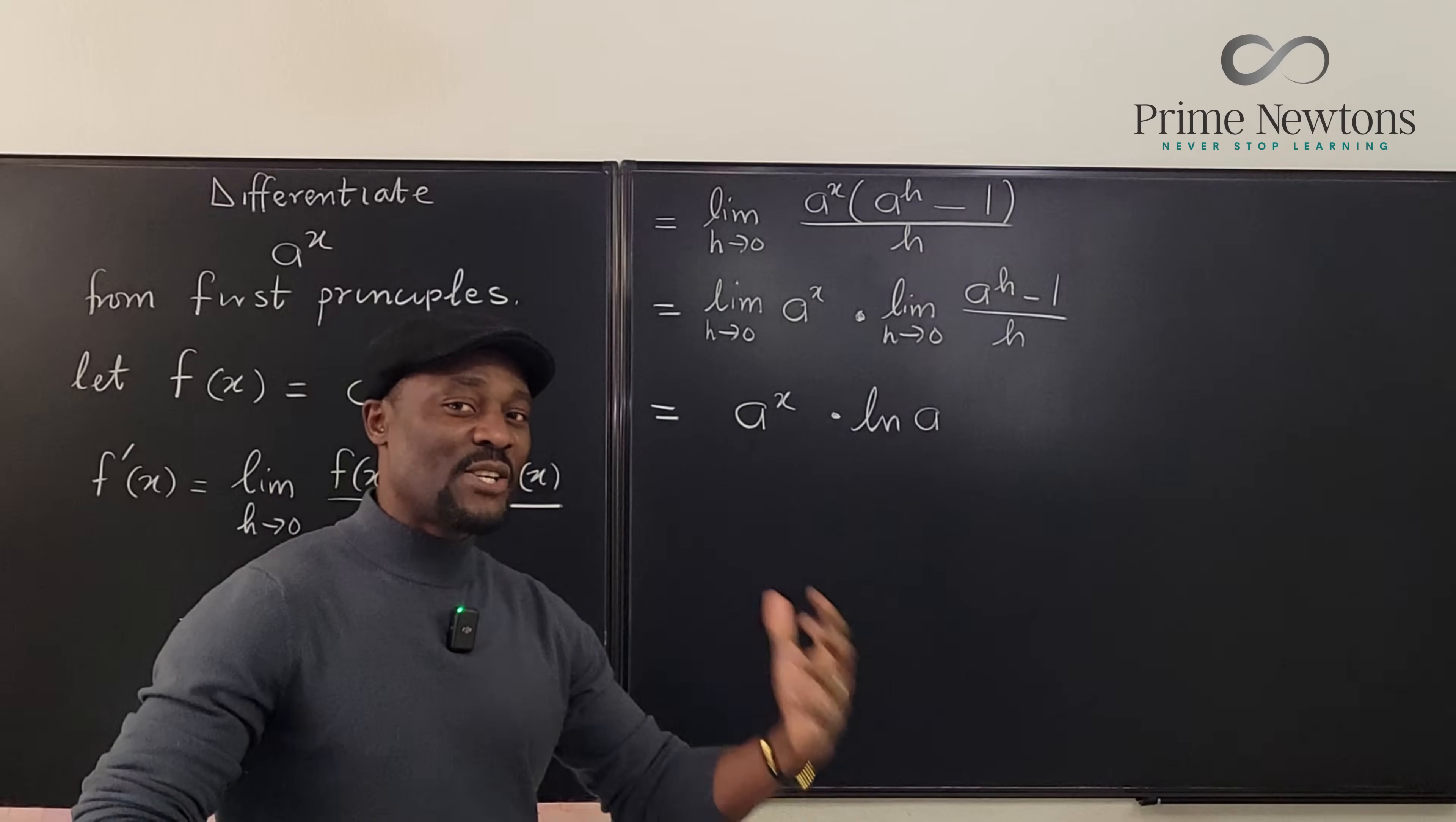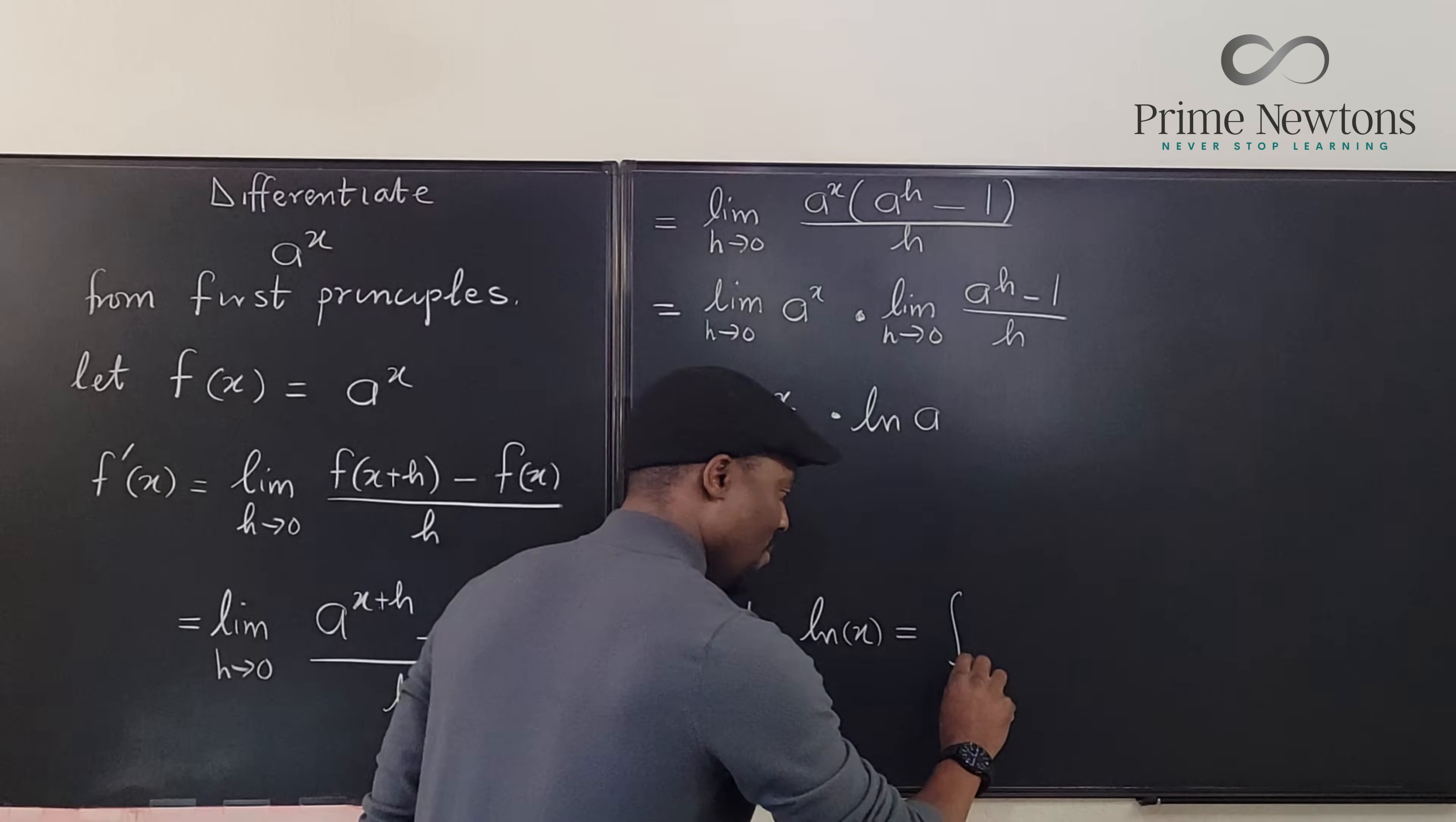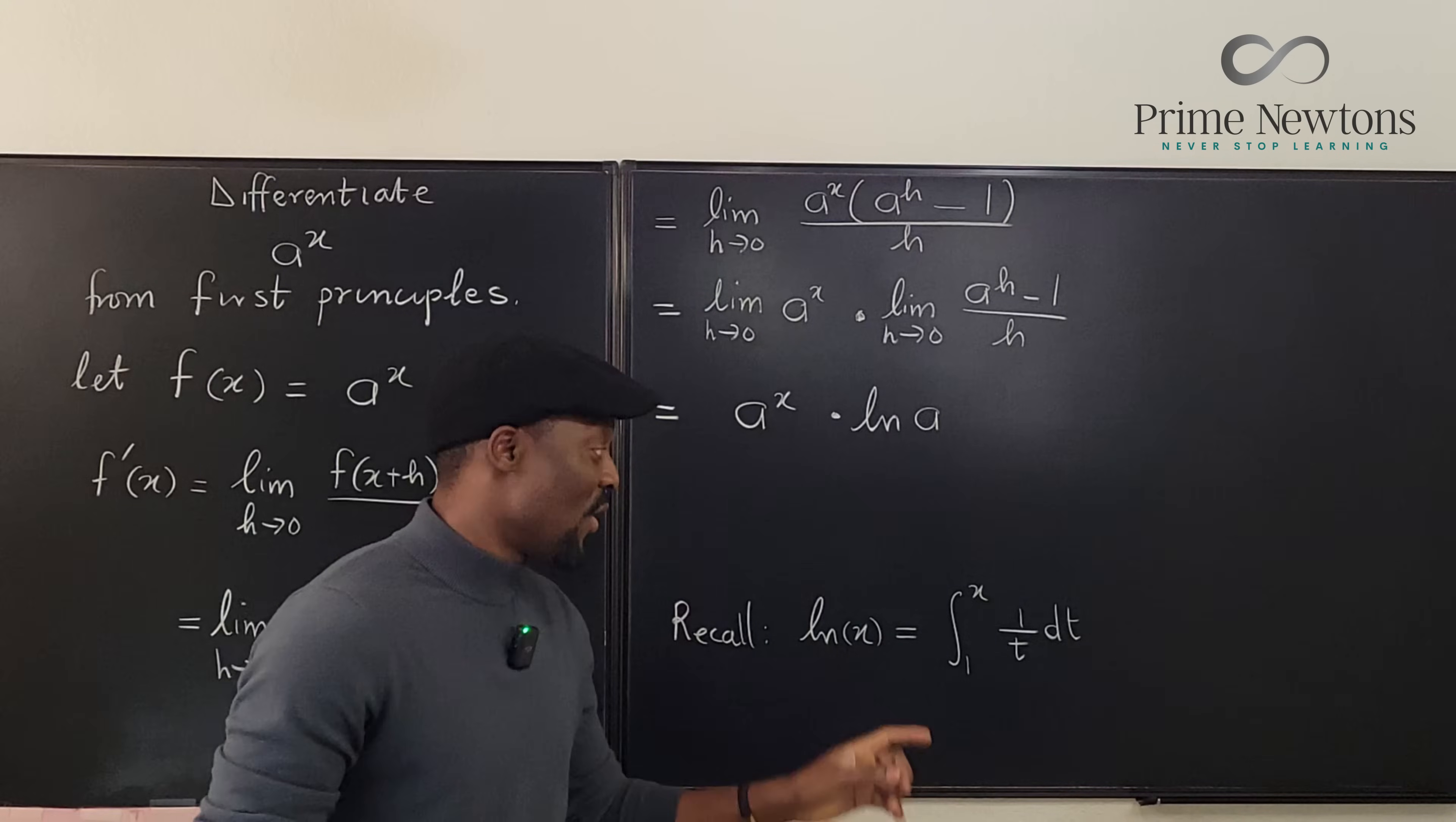Okay so the natural log of anything has two standard definitions, one as an integral, the second as a limit. Let me just write this. Recall that the natural log of x is equal to the integral from 1 to x of 1 over t dt. Now you just perform this integral you'll end up with ln of x as your final answer. This is the integral definition and this is the most common definition that we know.